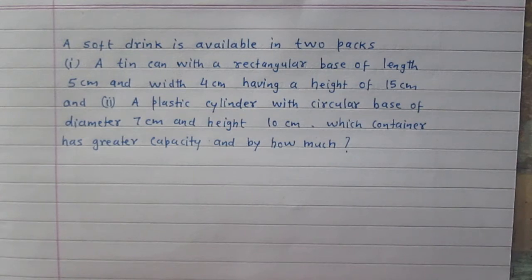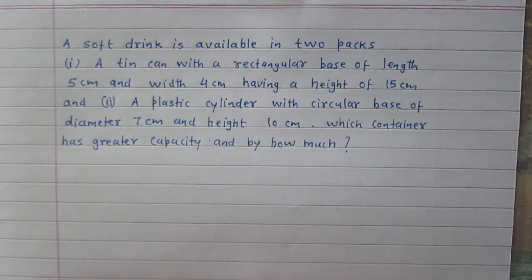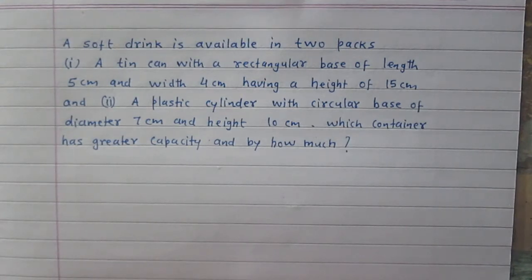A soft drink is available in two packs. First, a tin can with a rectangular base of length 5 cm and width 4 cm, having a height of 15 cm.